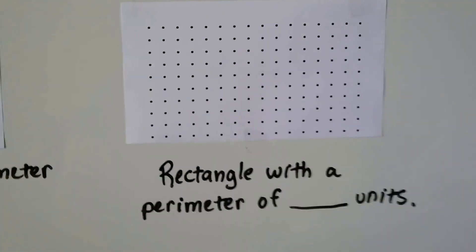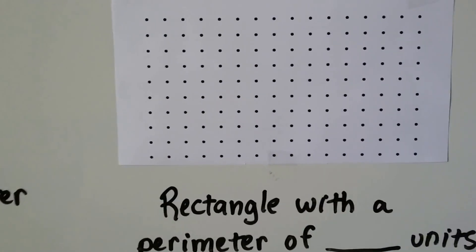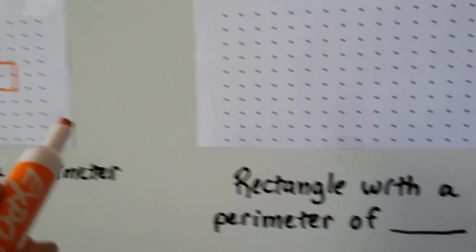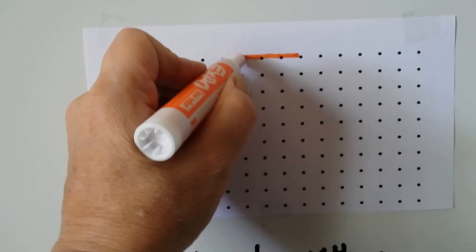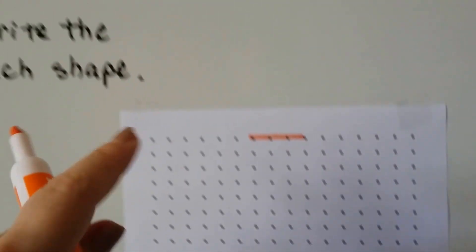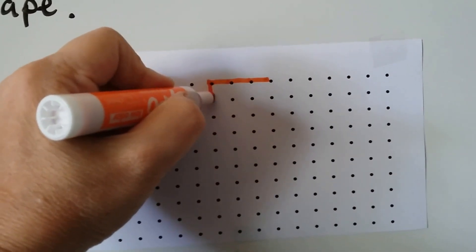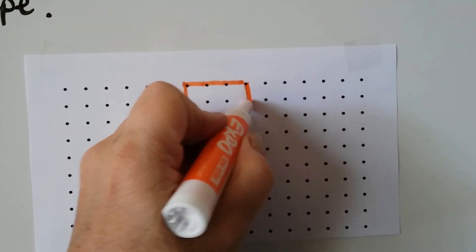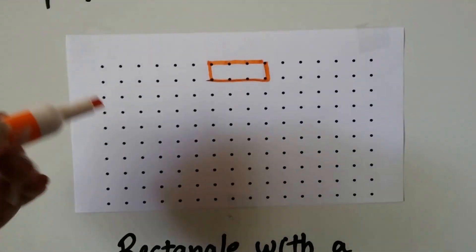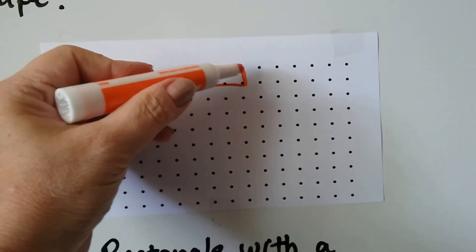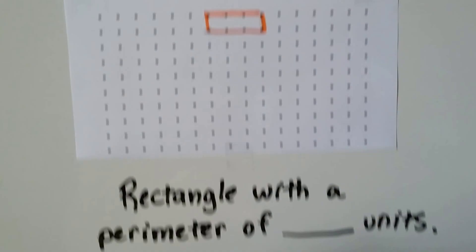We can do a rectangle. The instructions say to make it either one, two, or three units long. A rectangle isn't like a square where all the sides are the same — a rectangle has two sides that are the same. So we can make one side one, two, three units and the other side one unit long, with three units on the bottom. That's a rectangle. What's the perimeter? On the top we have 1, 2, 3, 4, 5, 6, 7, 8 — going all the way around, it's 8 units.